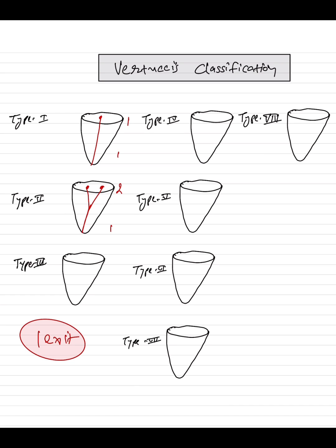In type three, in the beginning there is a single canal which divides into two, and then they fuse again together to form a single exit. So the form becomes one-two-one. For type one, two, and three there is a single exit.